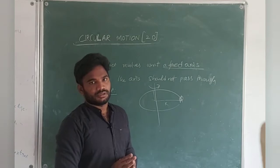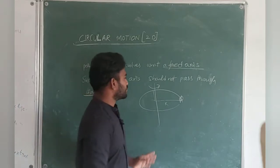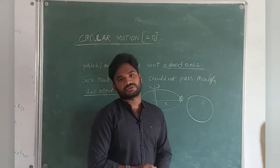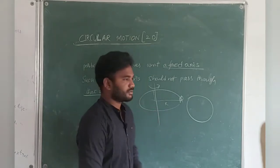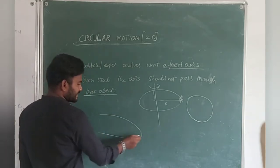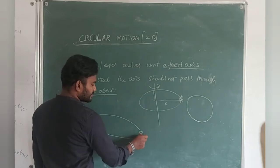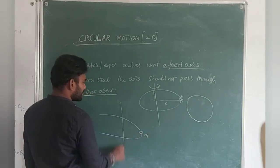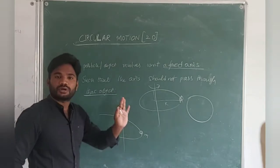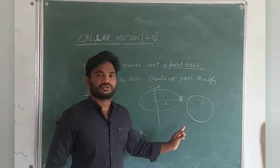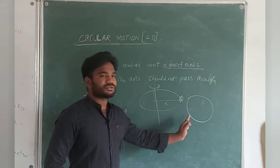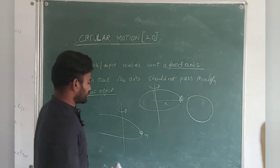The path may not be a perfect circle, yet it will come under circular motion. Suppose an object is revolving in some path — if the axis of rotation does not pass through the object, it definitely comes under circular motion. The axis or fixed axis of rotation should not pass through the object — then it comes under circular motion.